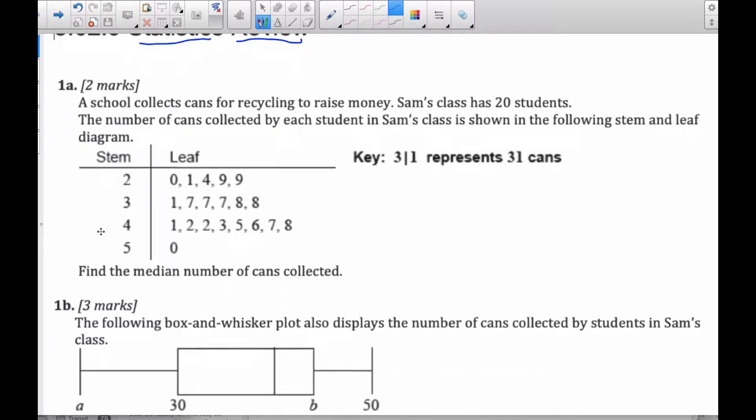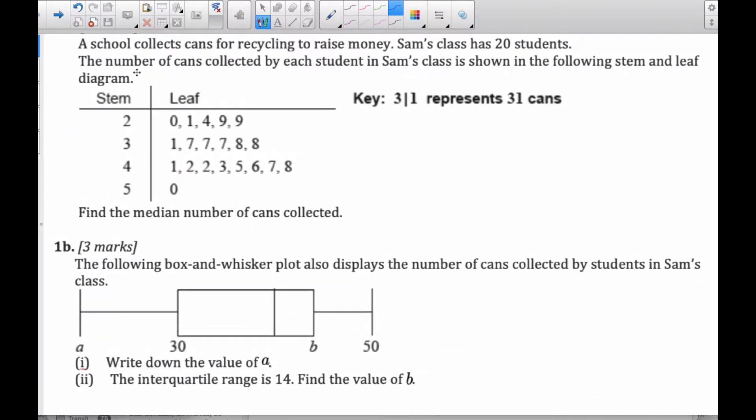So if you read this scenario here, you have a bunch of students collecting cans for recycling in Sam's class and there's 20 students in total. And here's the number of cans collected, shown in a stem and leaf plot. So the key says 3 slash 1 is 31 cans, so this 2 and let's say this 9 represents 29 cans collected by one of Sam's classmates.